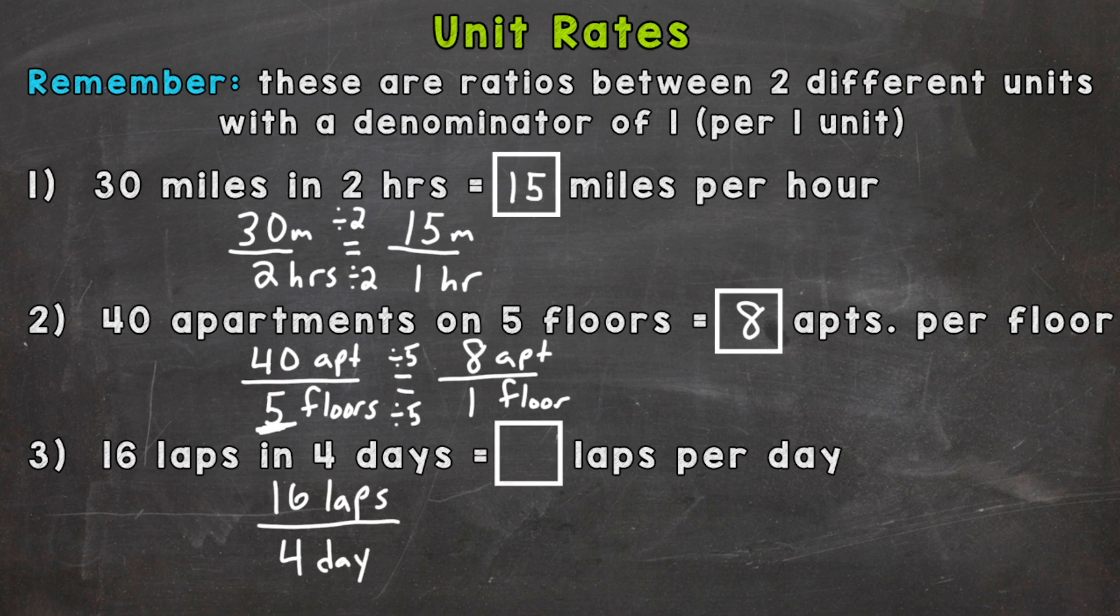And now we need a denominator of 1 to give us our unit rate. So we divide by 4 both the top and bottom, numerator and denominator, by 4. 16 divided by 4 will give us 4 laps. 4 divided by 4 will give us 1 day. So 4 laps per 1 day or per day.